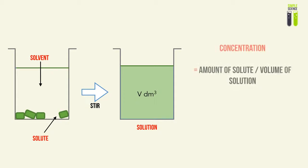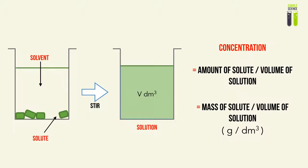We would describe the concentration as the amount of solute divided by the unit volume of solution. One way to describe amount is by mass, so we can describe the concentration of the solution by the mass of solute divided by the volume of solution. This gives us a value with units of grams per decimetre cubed or grams per centimetre cubed.